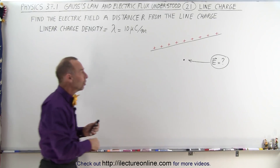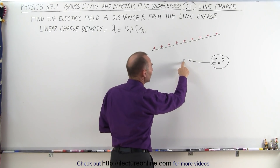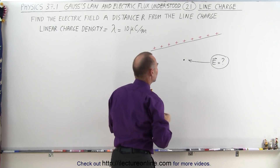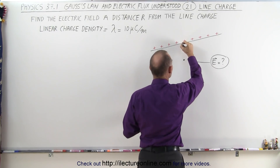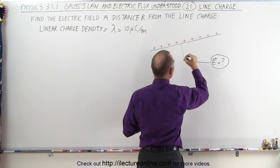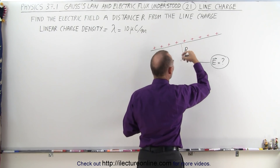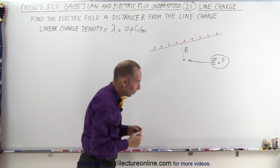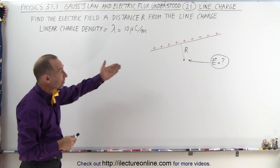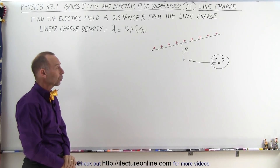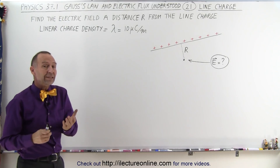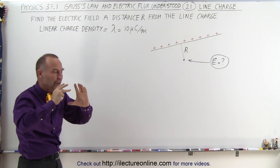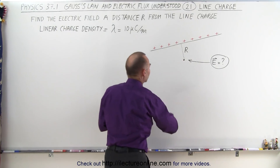We're trying to find the electric field strength and direction at some distance away from the line charge. If we draw a perpendicular line from the line charge to the point of interest, we call that the distance r, and r can be any distance away from that line charge. The way to find it is to use Gauss's law and create a Gaussian surface where the edge of the surface goes to the point of interest.